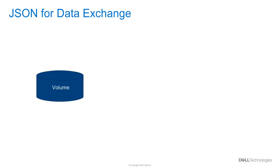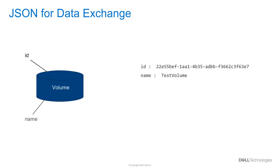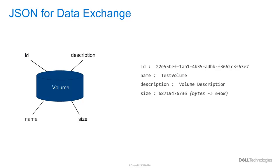PowerStore uses JSON format, which is easy for us to read and easy for computers to parse. It's based on attribute-value pairs as the following example shows. Imagine we have a volume — it can be described with several attributes like instance ID, a name, description, and the size of the volume. A JSON object is just as easy as adding some curly brackets, putting quotes around strings, and dividing lines by commas. That's a valid JSON example as we get from the system.